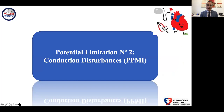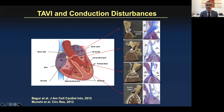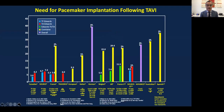Another limitation is conduction disturbances, which appear especially when applying TAVR devices, mainly self-expanding devices. The reason we have conduction disturbances is because the conduction system is very close to the LVOT tract, and especially the left bundle is superficial after the muscular septum, as shown in this figure.